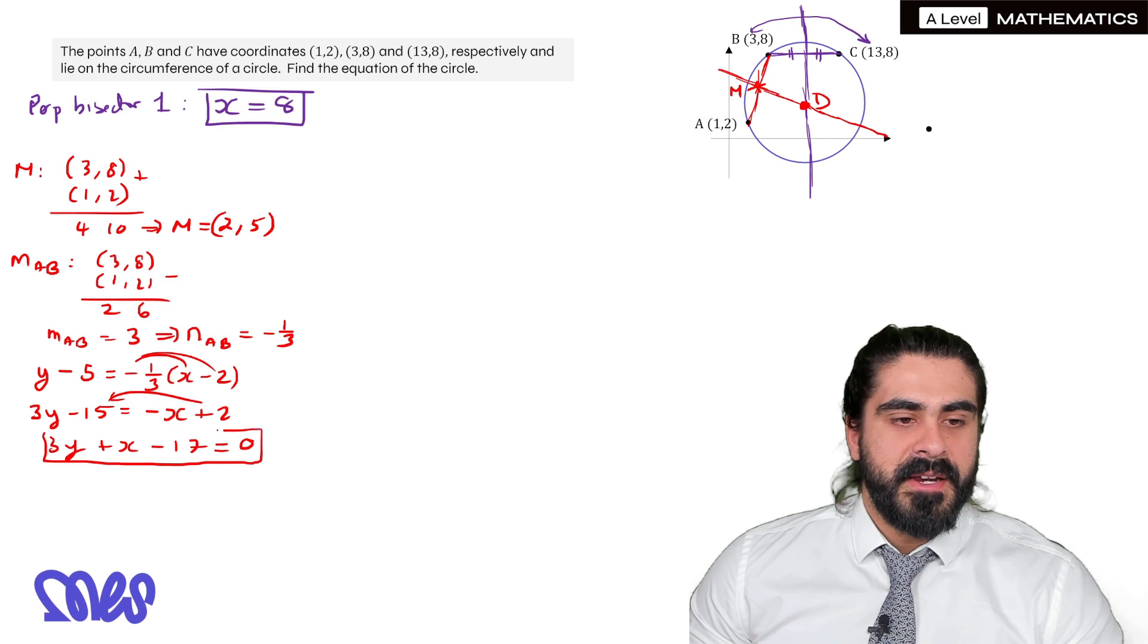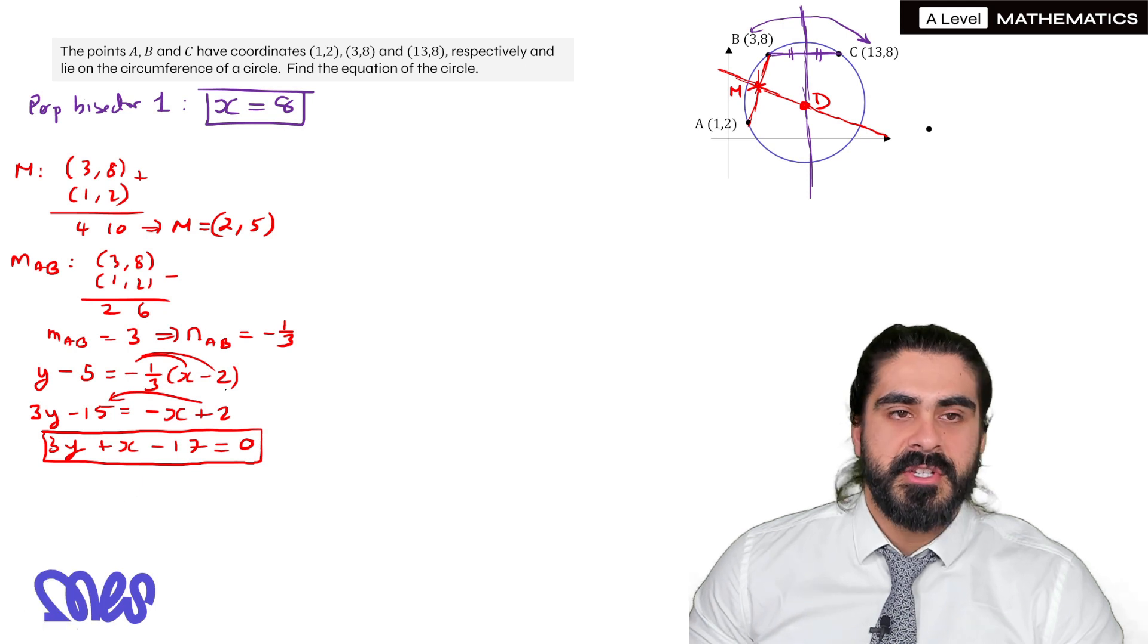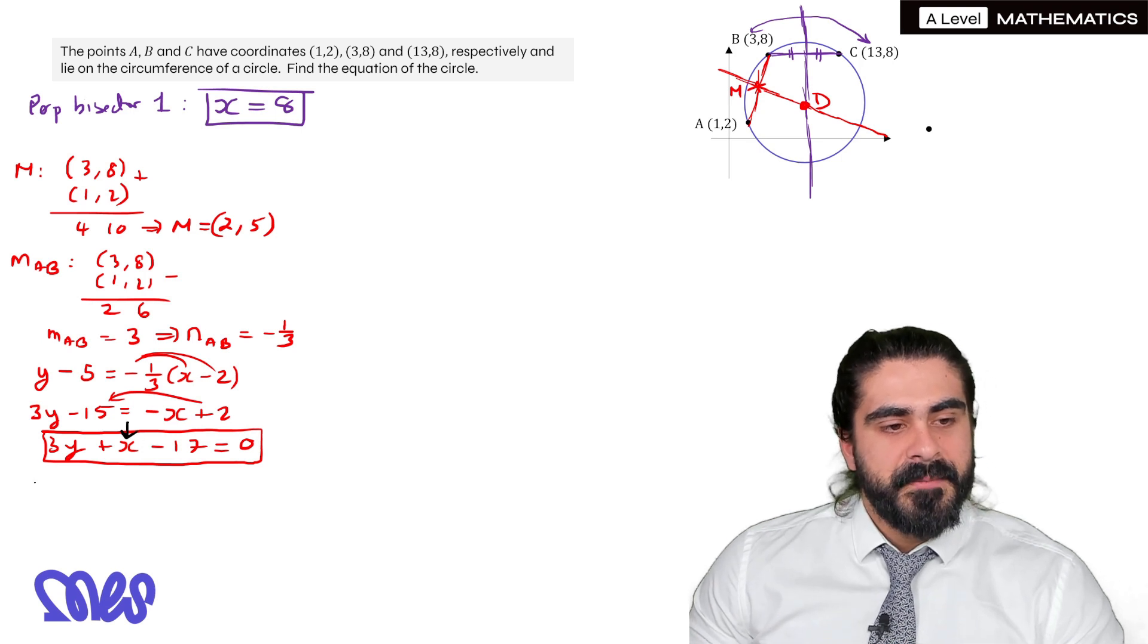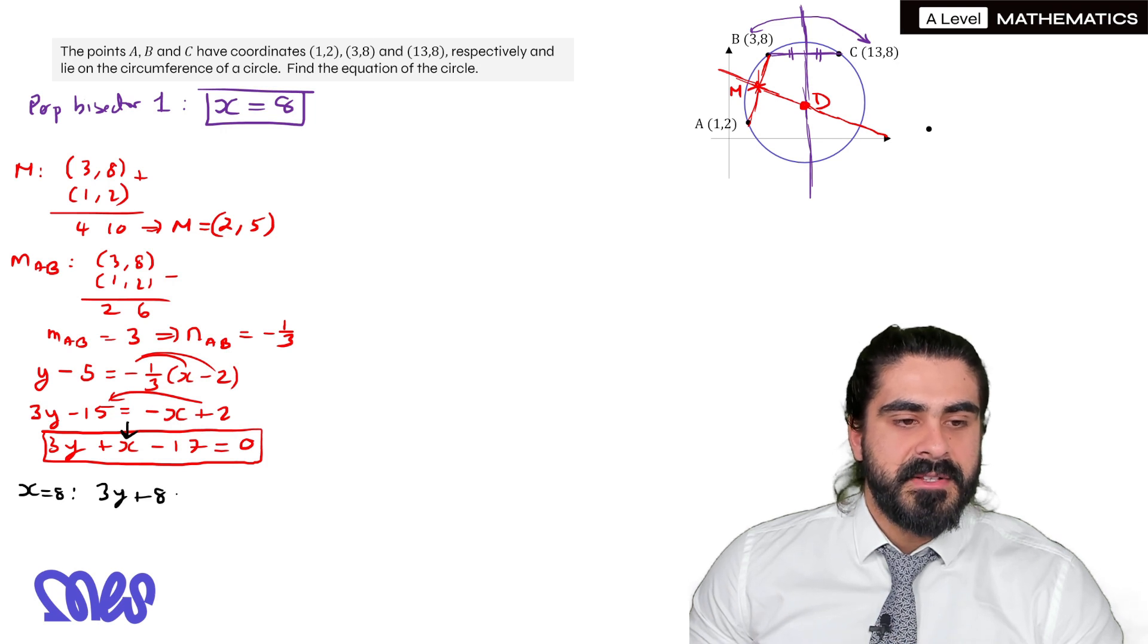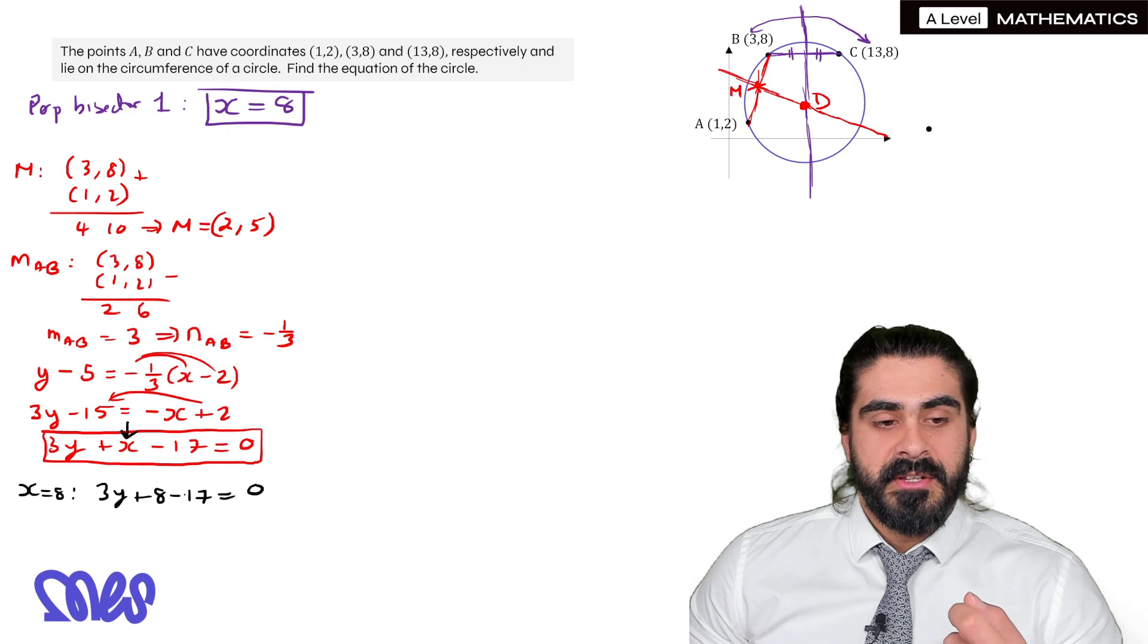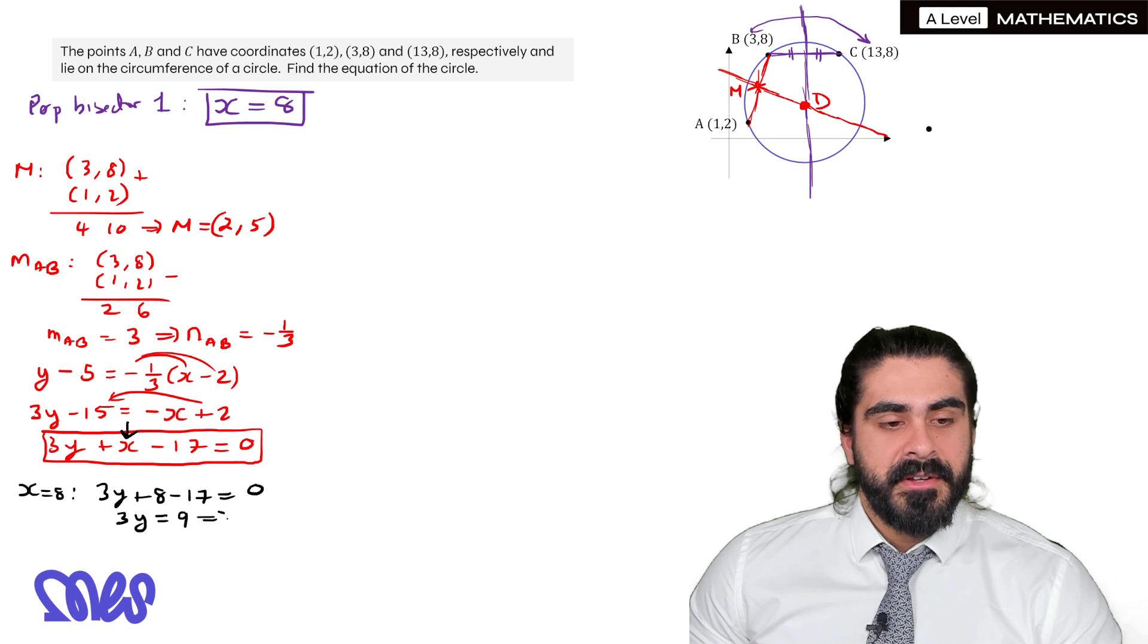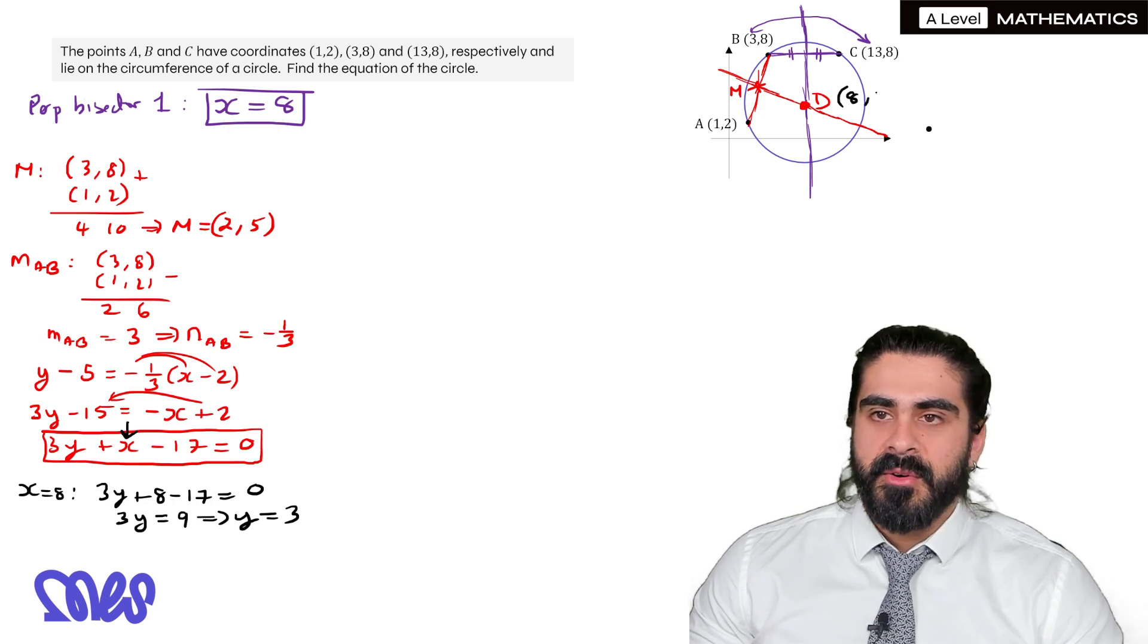Now we want to find the coordinates of D. This is just simultaneous equations, we're finding where those perpendiculars meet each other. So x equals 8, I'm going to sub into here to find out what the y value is. When x equals 8, we get 3y plus 8 minus 17 is 0. 8 minus 17 is the same as the negative of 17 minus 8, which is minus 9. Move the 9 over, you're going to get 3y is 9, so y is 3. So then we know that the coordinates of this is x is 8, y is 3.